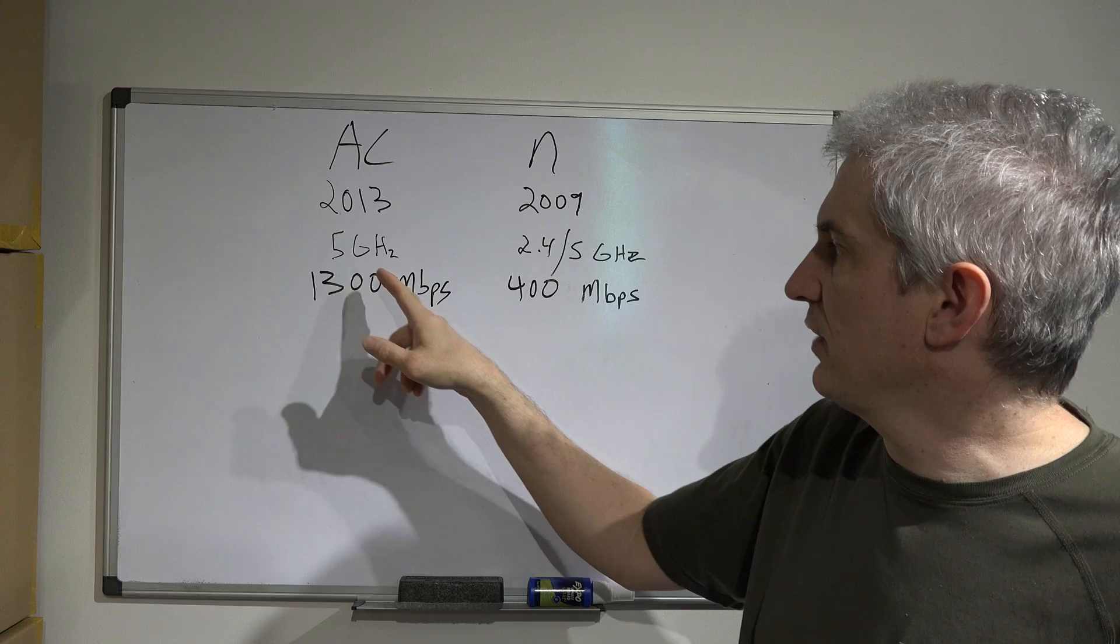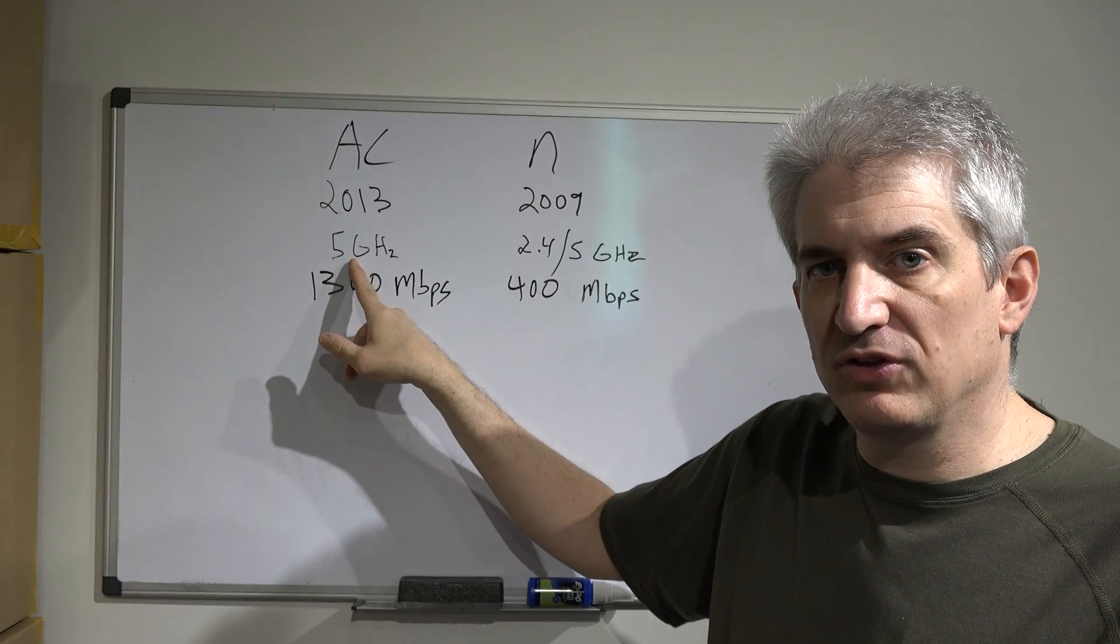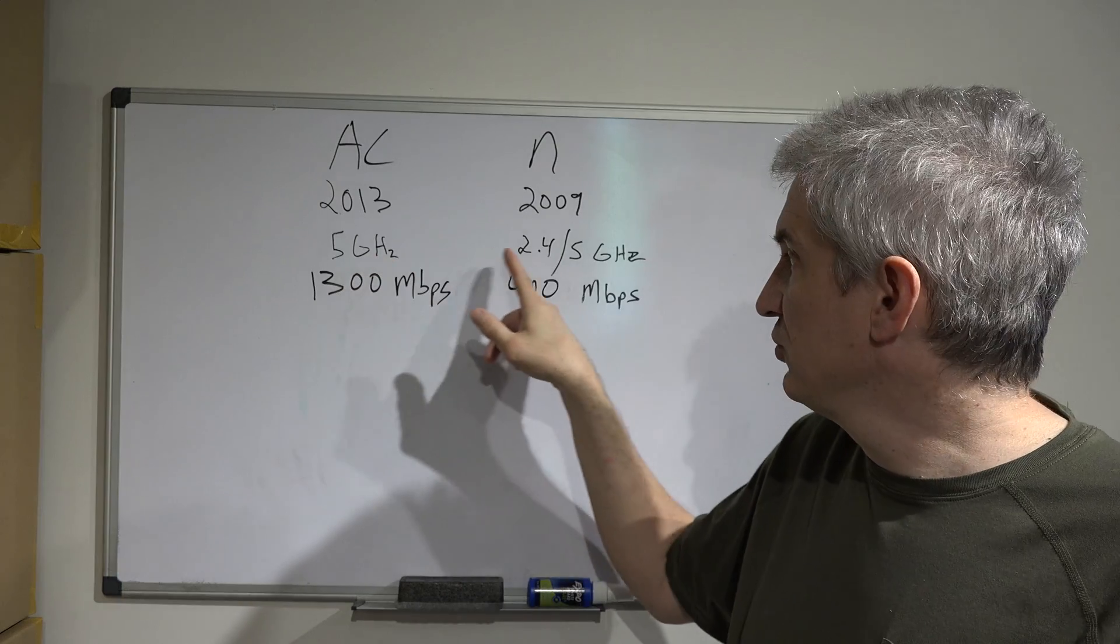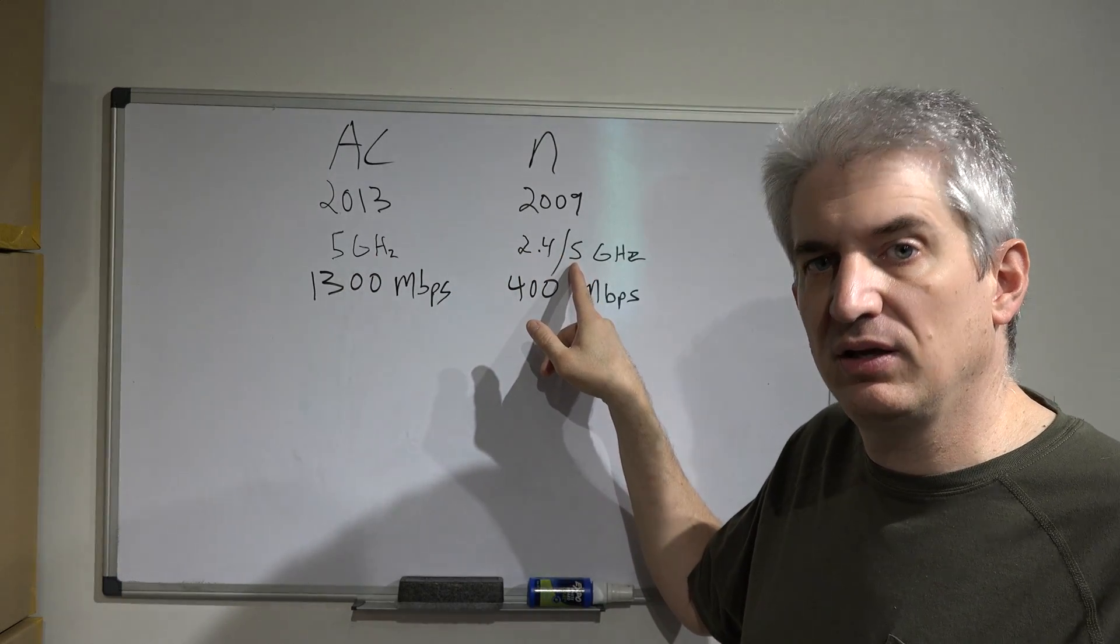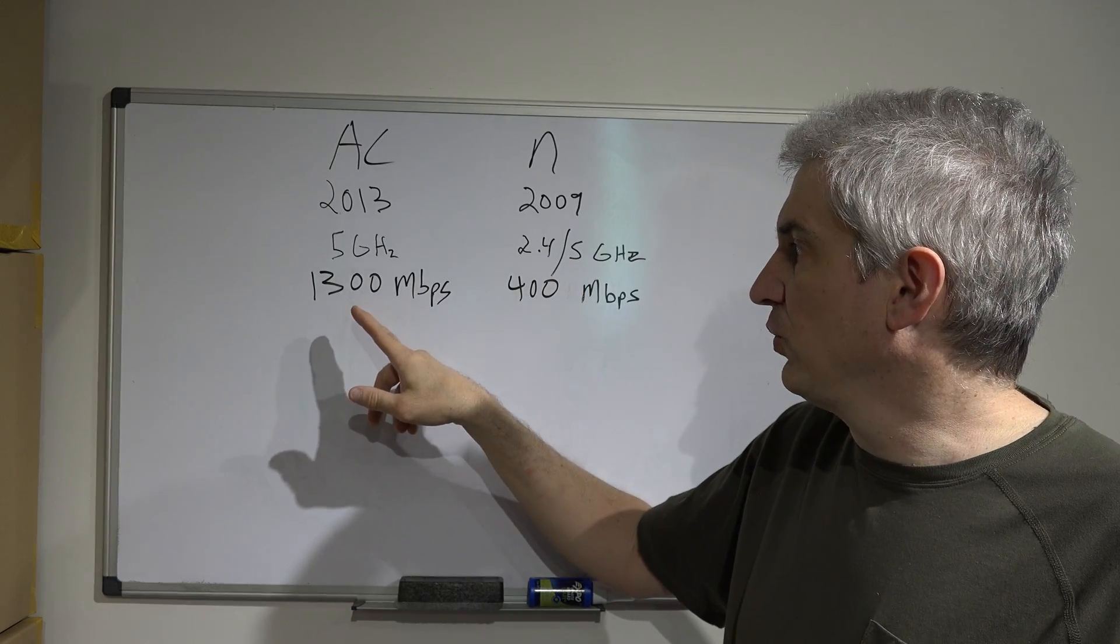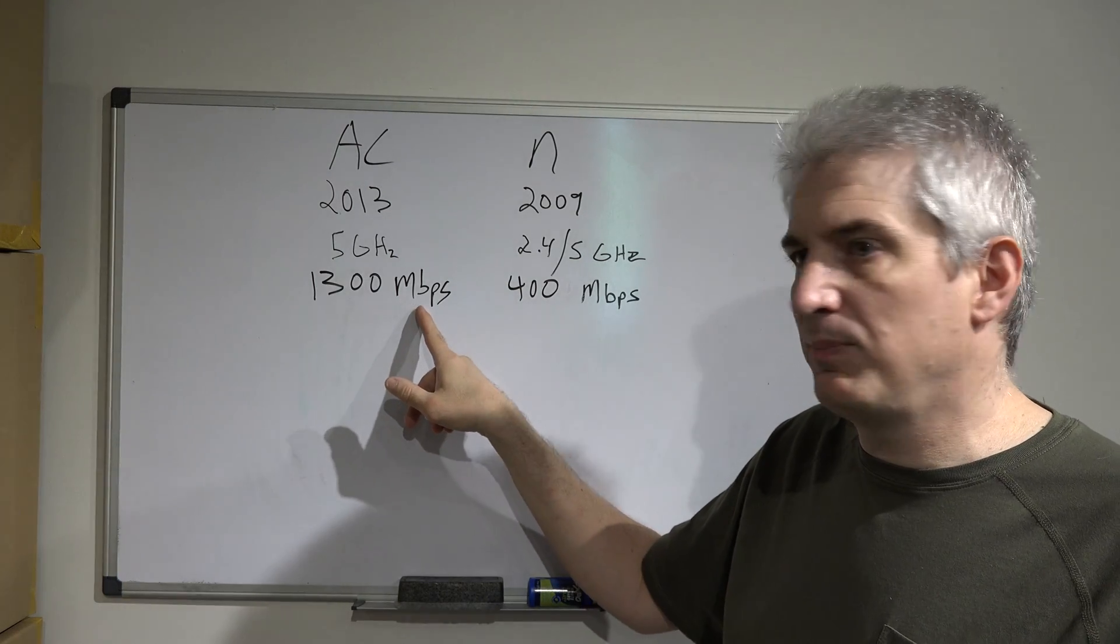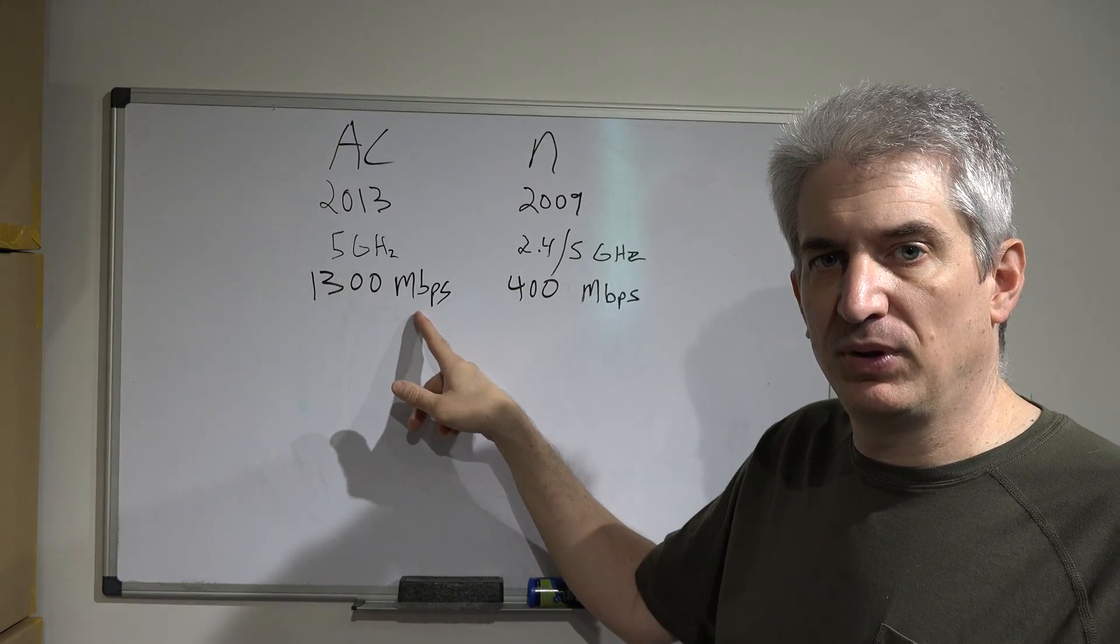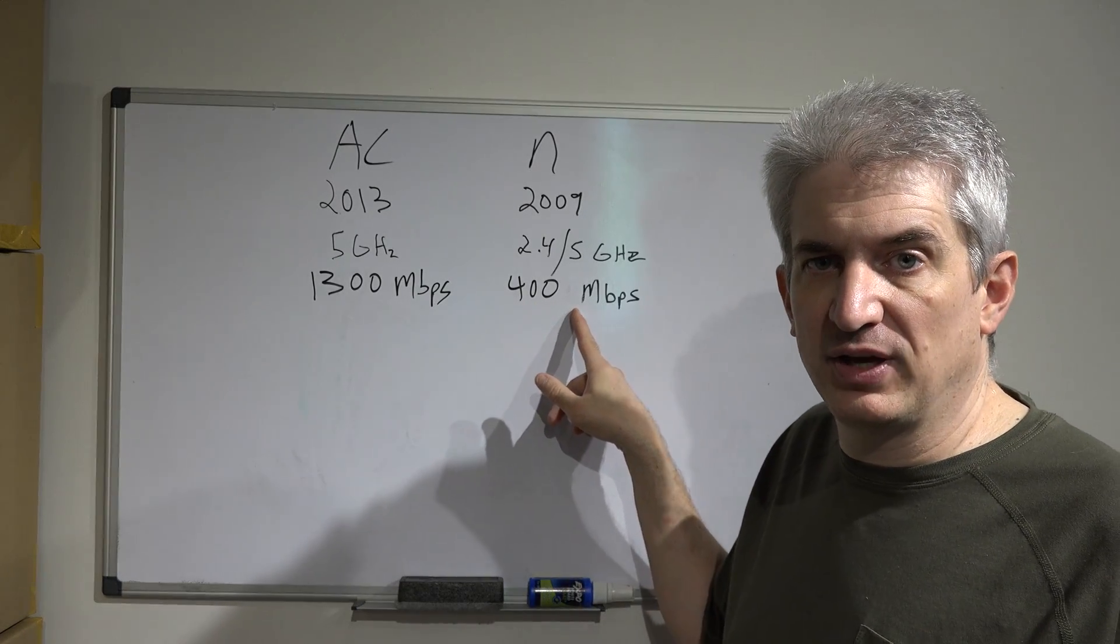Another difference here is 5 GHz is what Wireless AC runs on. 2.4 and 5 GHz is supported on Wireless N, and we'll talk about why that's important in a minute. Also, the theoretical maximum on these is 1300 on Wireless AC, that's megabits per second, or a million bits per second, and then 400 on Wireless N.